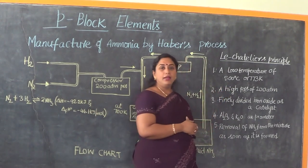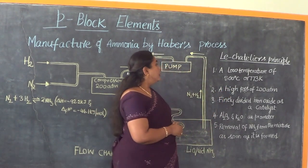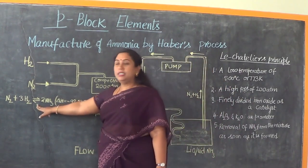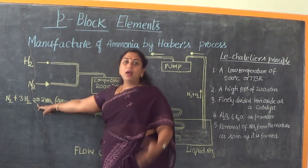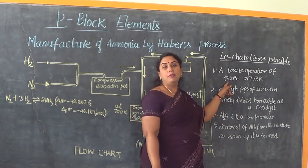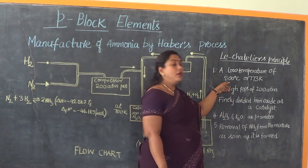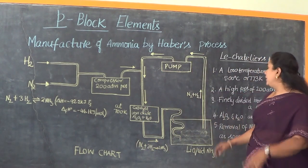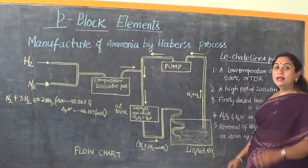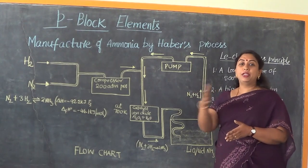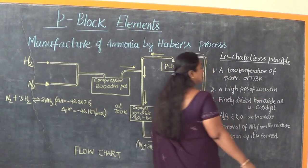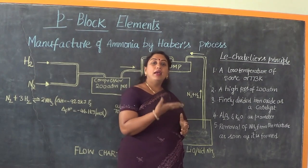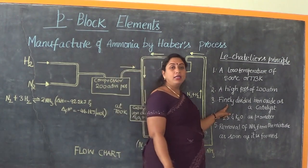As per Le Chatelier's principle, for the system in equilibrium while producing ammonia, we need to maintain a moderate temperature of around 500 degrees Celsius, which is approximately 700 to 773 Kelvin. We also require very high pressure of about 200 atmospheres, and the reaction requires a catalyst in the form of iron oxide taken in finely divided form.